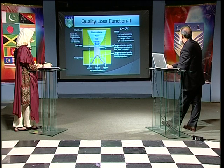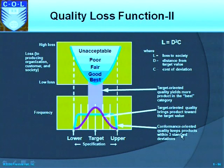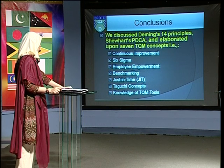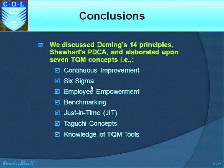Target-oriented quality brings product towards the target value, yielding more product in the best category — that is the main point of Taguchi's quality loss function concept. Conformance-oriented quality keeps products within three standard deviations. Today we learned Deming's 14 principles, Shewhart's PDCA cycle, and elaborated upon the seven total quality management concepts: continuous improvement, Six Sigma, employee empowerment, benchmarking, just-in-time, Taguchi concepts, and knowledge of TQM tools. Next time we will continue our discussion on the tools of total quality management.